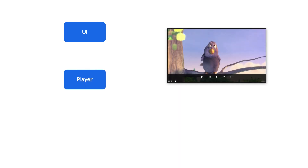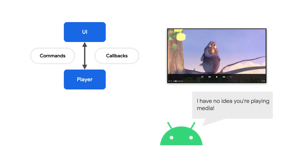Your media app likely consists of two main parts. First, a media player which renders audio and video content, and the user interface which shows what's playing and provides a way for users to control playback. However, in this architecture, the Android system and other apps running on the device aren't aware that media is being played, and so they can't provide a convenient way for your user to view and control the playback.